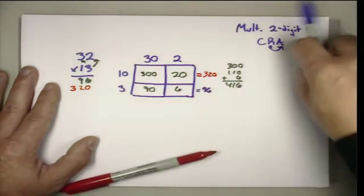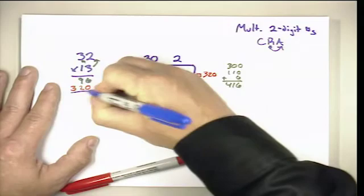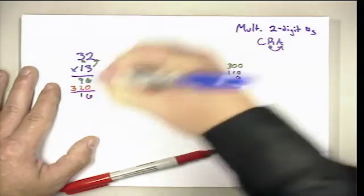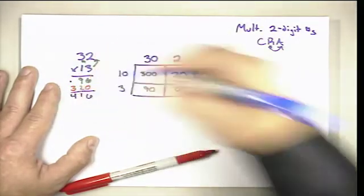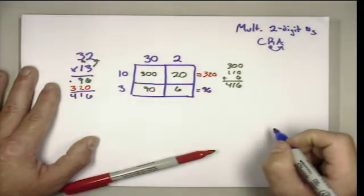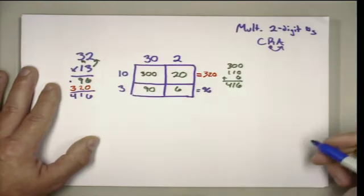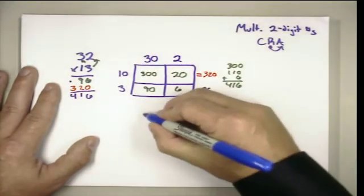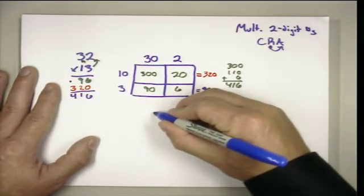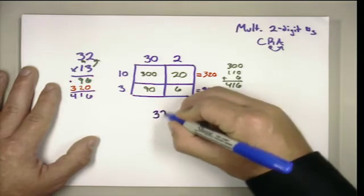Then of course when we add those up, we get 416, our same final product. Now you might have some students that want a little bit more explicit connection.